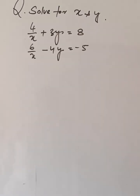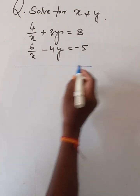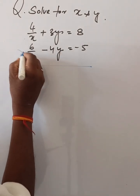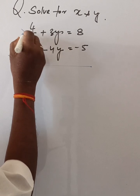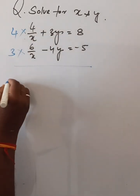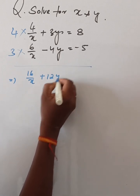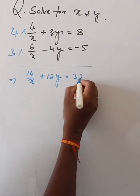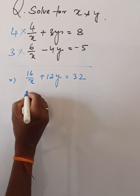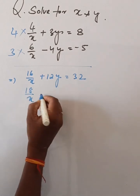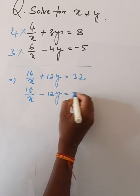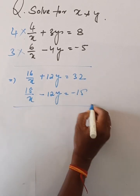Solve for x and y: 4 by x plus 3y is equal to 8, and 6 by x minus 4y is equal to minus 5. Balancing this, 3 is here and 4 is there. This gives 16 by x plus 12y is equal to 32. Again, 18 by x minus 12y is equal to minus 15.